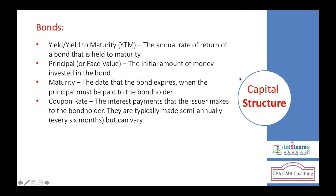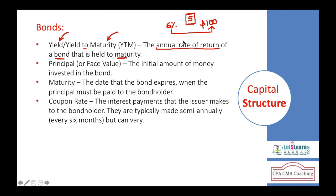Now we need to understand a few key terms involved in bonds. Yield, or yield to maturity, is the annual rate of return of a bond that is held to maturity. For example, when a bond is issued at a rate of 6% with a bond value of $100 over a 5-year tenor, the bond holder gets 6% each year. That 6% is the yield rate or yield to maturity. The $100 is called the legal value, base value, or principal value — the initial amount invested by the bond holder.